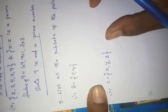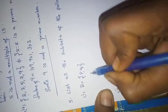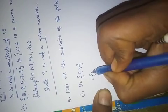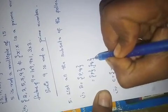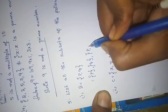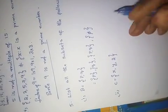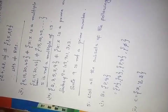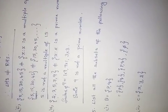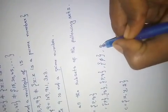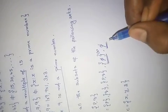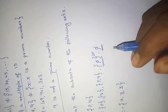Let us go to the fifth problem: list all the subsets of the following sets. See here — for the set {p, q}: the subsets are {p}, {q}, {p, q}, and the null set ∅. Every set has a null set as a subset. So the subsets are {p}, {q}, {p,q}, and ∅. Did you understand? Is it easy?